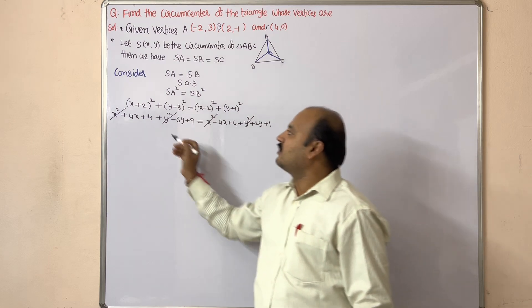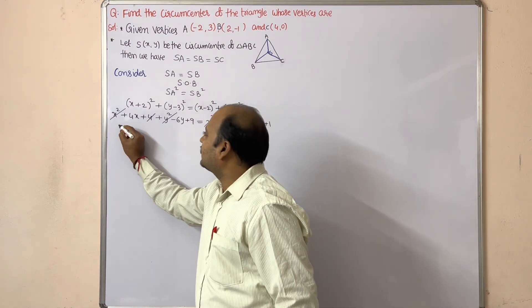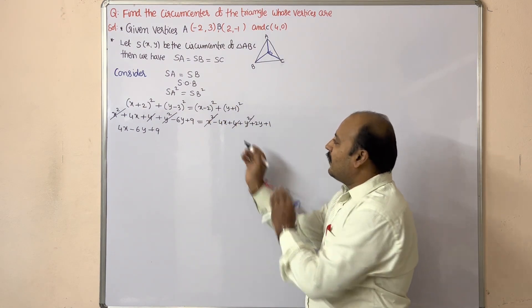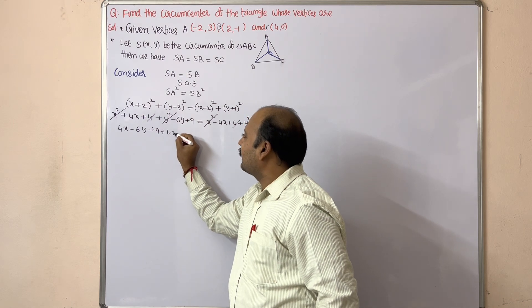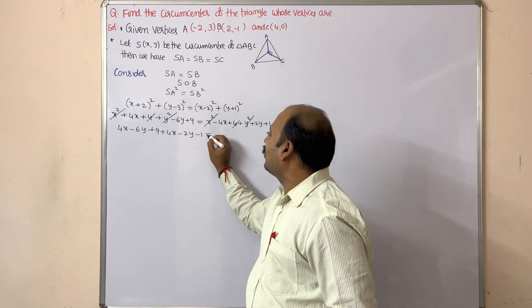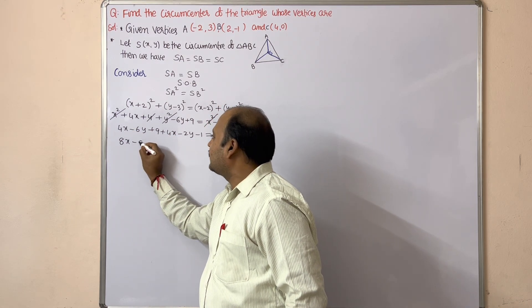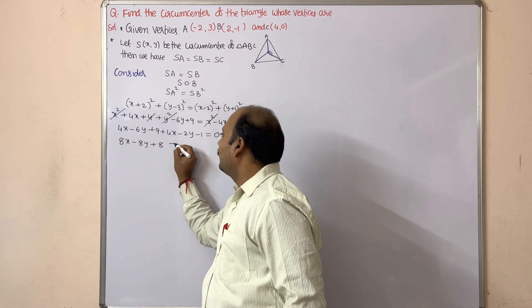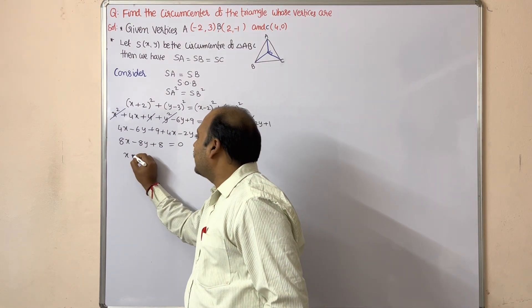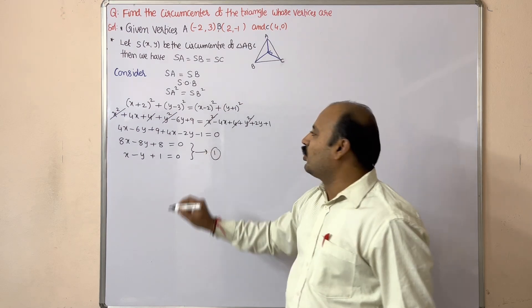After cancelling common terms, we bring everything to one side: 4x + 4x − 6y − 2y + 9 − 1 = 0, giving 8x − 8y + 8 = 0. Dividing through by 8: x − y + 1 = 0. This is Equation 1.